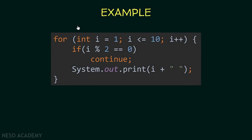Now let's see some examples. Over here I'm using a for loop: for int i equal 1, as long as i is less than or equal to 10, and i plus plus. So this loop runs 10 times. Inside the loop I'm testing if i is an even number — if i is an even number, I'm executing continue. So if i is an even number, I will stop executing the body of the loop and go execute the change, and after that we will continue executing the for loop normally. Now what if i is an odd number? This condition will be false, so the continue statement will not be executed, and we are going to print i plus space. So this code prints the odd numbers.